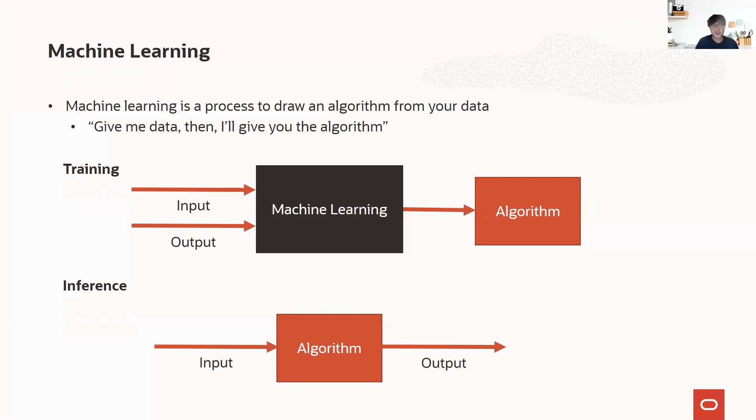On the contrary, the machine learning approach directly learns the desired algorithm from your data. With machine learning, you don't have to manually figure out the correlation between your input and output. We refer to the process of obtaining an algorithm out of the data as training, and the actual invocation of the learned algorithm as inference.